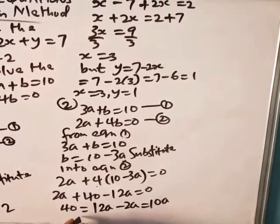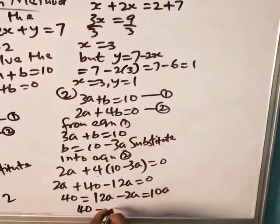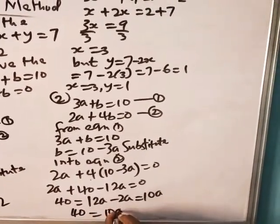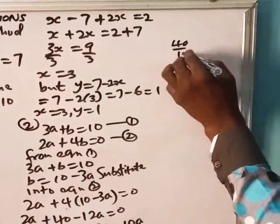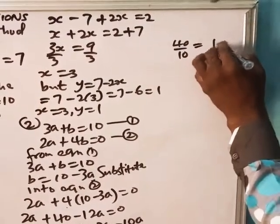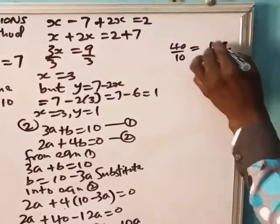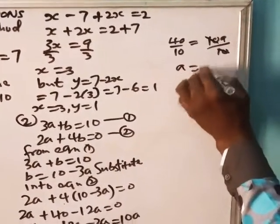And 12a minus 2a will give you 10a. So if we have 40 is equal to 10a. To get a divided by 10. So we have 40 over 10 is equal to 10a over 10. 10 divided by 10. So a is equal to 4.